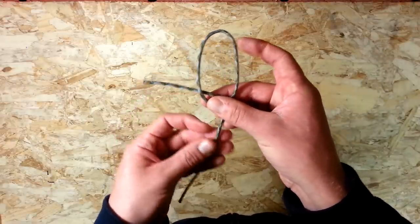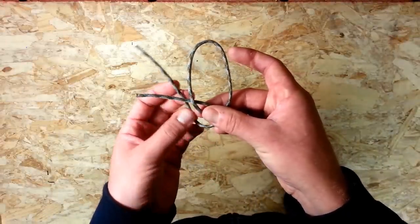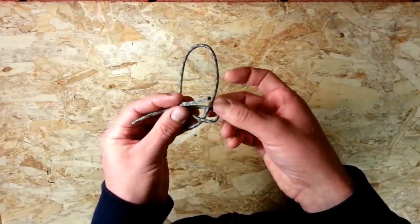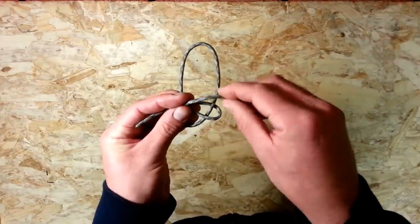Then you want to take your other cord here and you're going to come up behind the one you just brought around and if you see over here you have this little loop from the first cord, you're just going to go down through that.